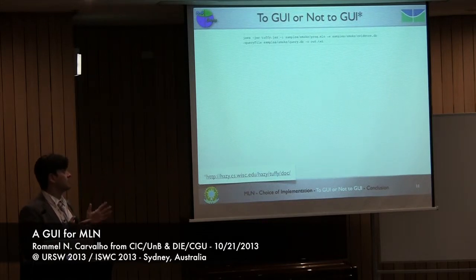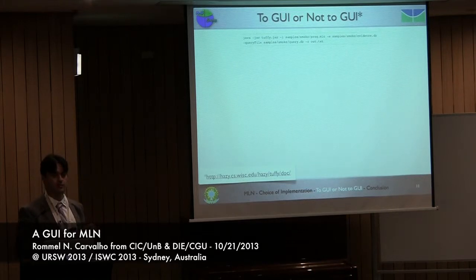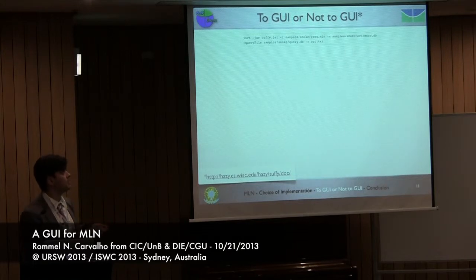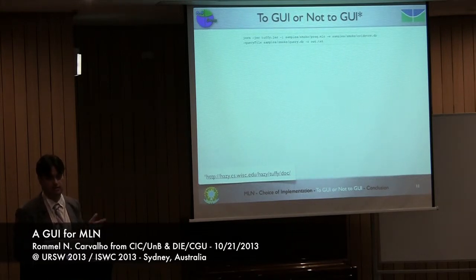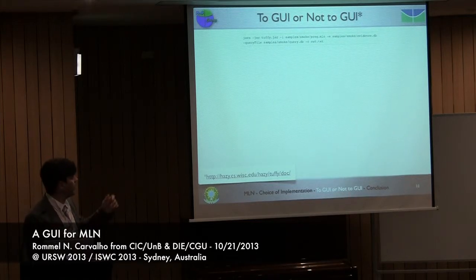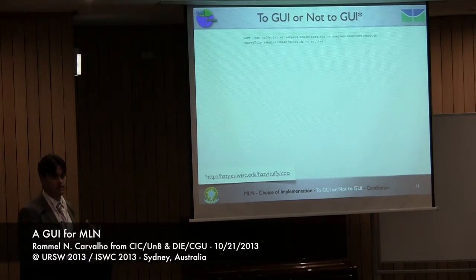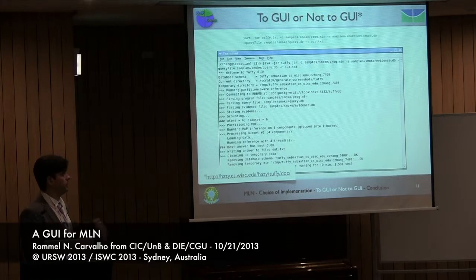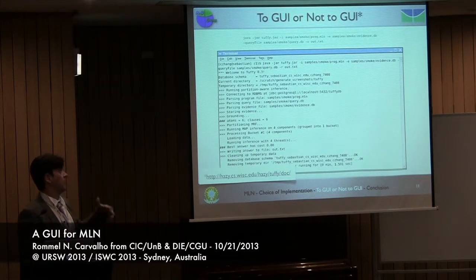It's just a command line. You have minus-i which is the input file — the Markov logic program, prog.MLN. Then the evidence file is evidence.db, which is just a text file. The query file is another file, and you want to throw the output into another file using minus-r. It's processed behind the scenes and in the end you have the result in out.file.txt.